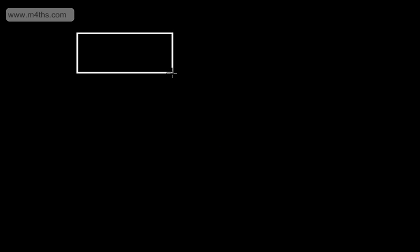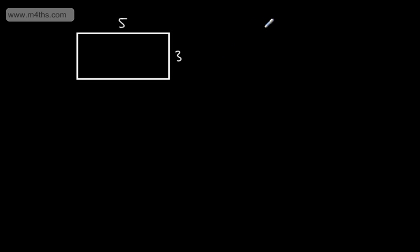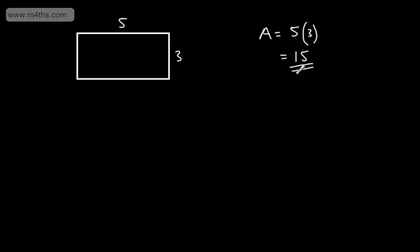I'm going to start with a rectangle and look at its area. This rectangle is 5 centimetres by 3 centimetres. The area is 5 times 3, which gives us 15 centimetres squared.